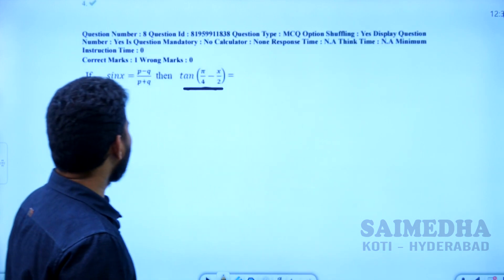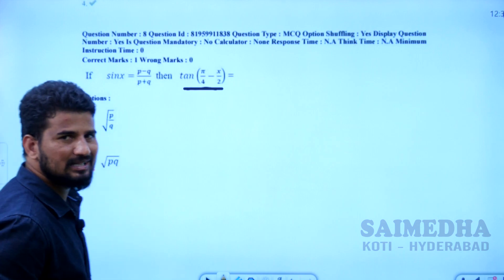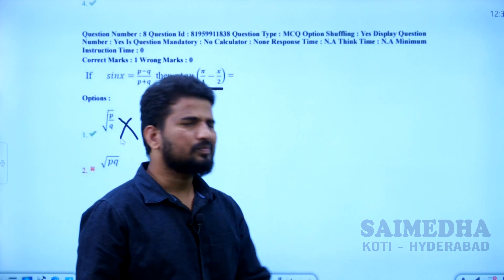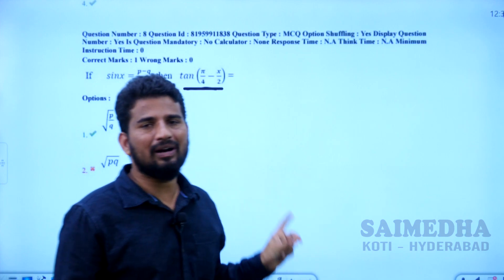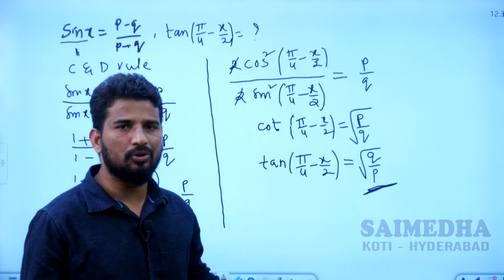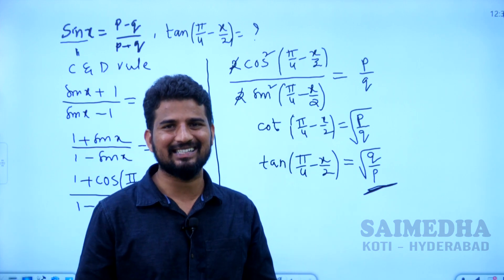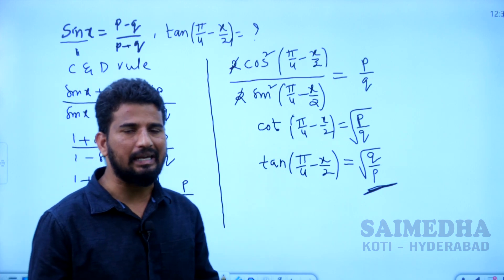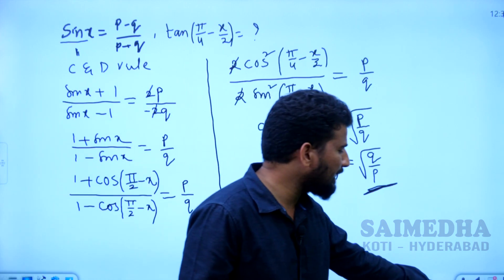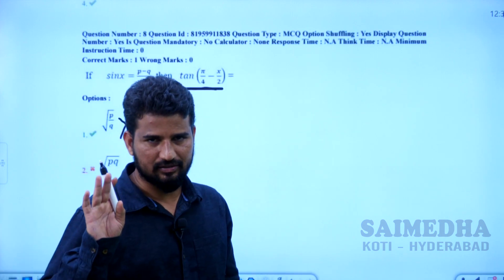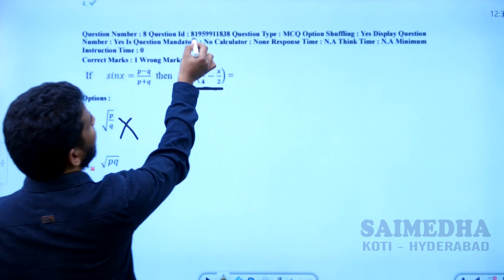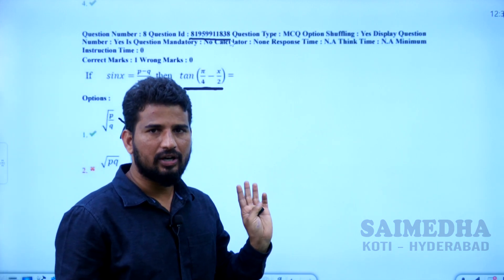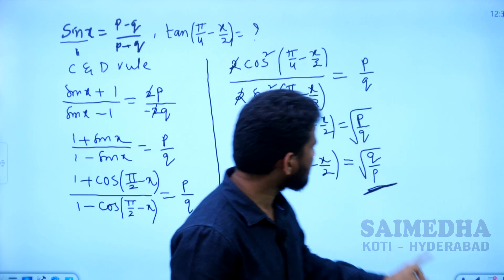But the answer mentioned in the key is wrong. This is the proof — we have done the calculation and verified it. There is a possibility of adding a mark here. The question number ID must be included while filing a key objection. The question number ID is 819599-11838. Please note this, then we will move on to the next question.